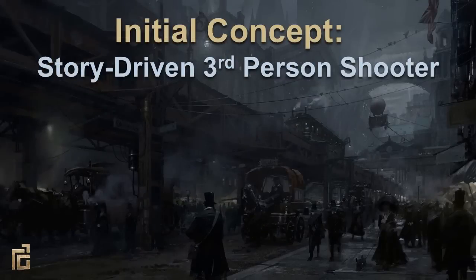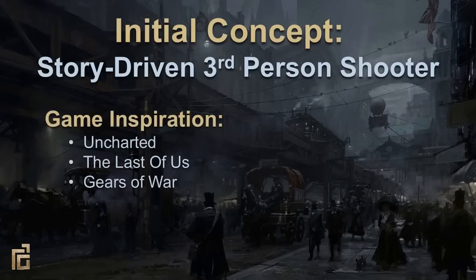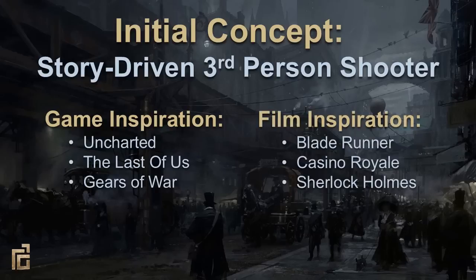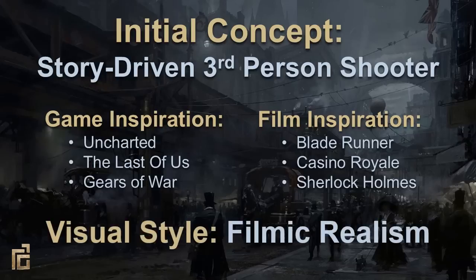We started development with a simple concept — we wanted to make a story-driven, third-person shooter. The next step was choosing games and film to draw inspiration from. We were influenced by games like Uncharted, The Last of Us, and Gears of War, and inspired by the tone and storytelling of films like Blade Runner, Casino Royale, and the recent Sherlock Holmes films. The combination of these influences led us to our visual style, which we call filmic realism.